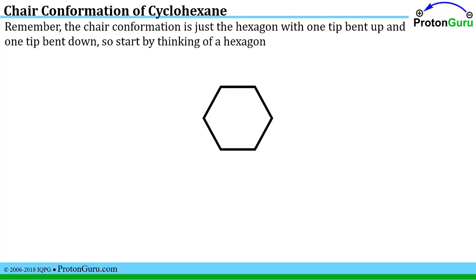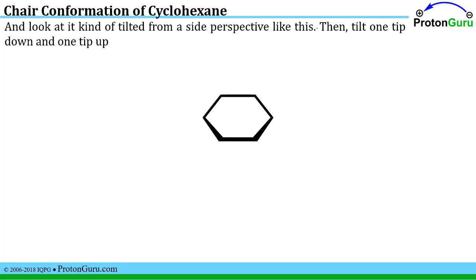So this is how you initially learn to draw cyclohexane, probably just as a hexagon. You can easily turn that normal looking hexagon into a chair conformation. First we kind of tip it, so I am imagining tipping that hexane towards the side, looking at it from the side so that this is the side of the cyclohexane ring that is tilted towards us.